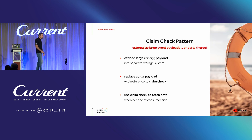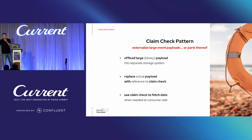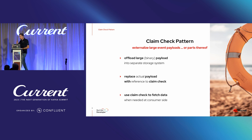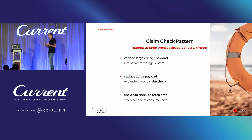What the claim check pattern suggests is that you try to find a way to externalize large payloads, or at least parts of them, to some other storage system — it's about offloading binary payloads to separate storage. An example could be S3: you store the actual data there, then use the S3 URL as the claim check, replace the original payload with just that claim check, and communicate it as your event. On the downstream side, whenever a consumer wants to work on the actual data, they resolve that claim check and trade it for the actual data against the separate storage system.